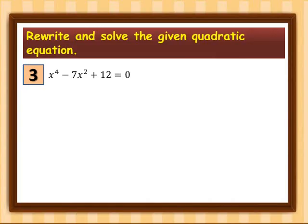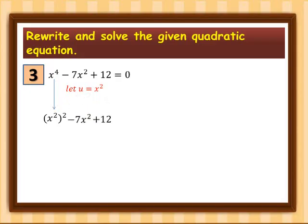Let's proceed to the third example: x raised to the 4th minus 7x squared plus 12 is equal to 0. Our equation is degree 4, so we let u equal to x squared. Applying the law of exponents, x to the 4th is (x squared) squared. Substituting, since x squared equals u, we get u squared minus 7u plus 12 is equal to 0.